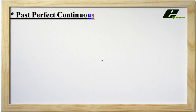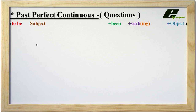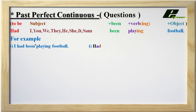Let us see questions in Past Perfect Continuous Tense. To form a question, we change the places of 'to be' (had) and the subject. 'Had' moves to the front and the subject comes after it, turning the sentence into a question. For example: I had been playing football → Had I been playing football? 'Had' came forward and 'I' moved backward, and the sentence becomes a question.